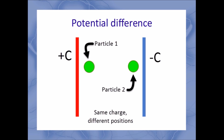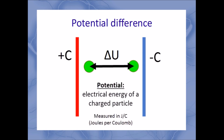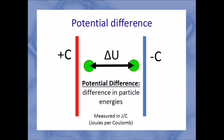The position of a charged particle affects the energy associated with it. Scientists consider the positive plate to be a high energy position, while the negative plate is a low energy environment. There's a difference in potential energy between the particles, which we label as delta U. The energy associated with a charged particle tells us its potential, measured in joules per coulomb — so it's energy per unit of charge. Potential difference is a difference, or change, in energies, and that's what delta U refers to. It's really just one potential minus another: the difference between high energy and low energy.